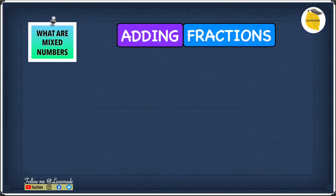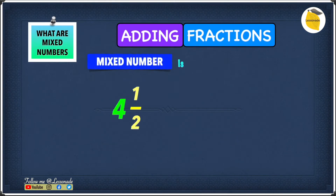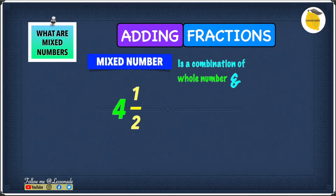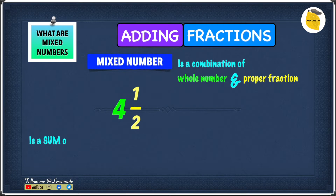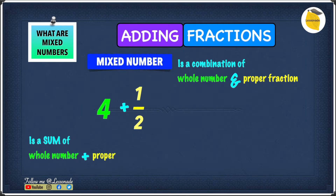Now let's start by having a look at what mixing numbers are. A mixing number is a combination of a whole number and a proper fraction. As you can see, the whole number is 4 and the proper fraction is 1 over 2. A mixing number is also a sum of the whole number and the proper fraction, so 4 plus 1 over 2 gives you 4 and 1 over 2.